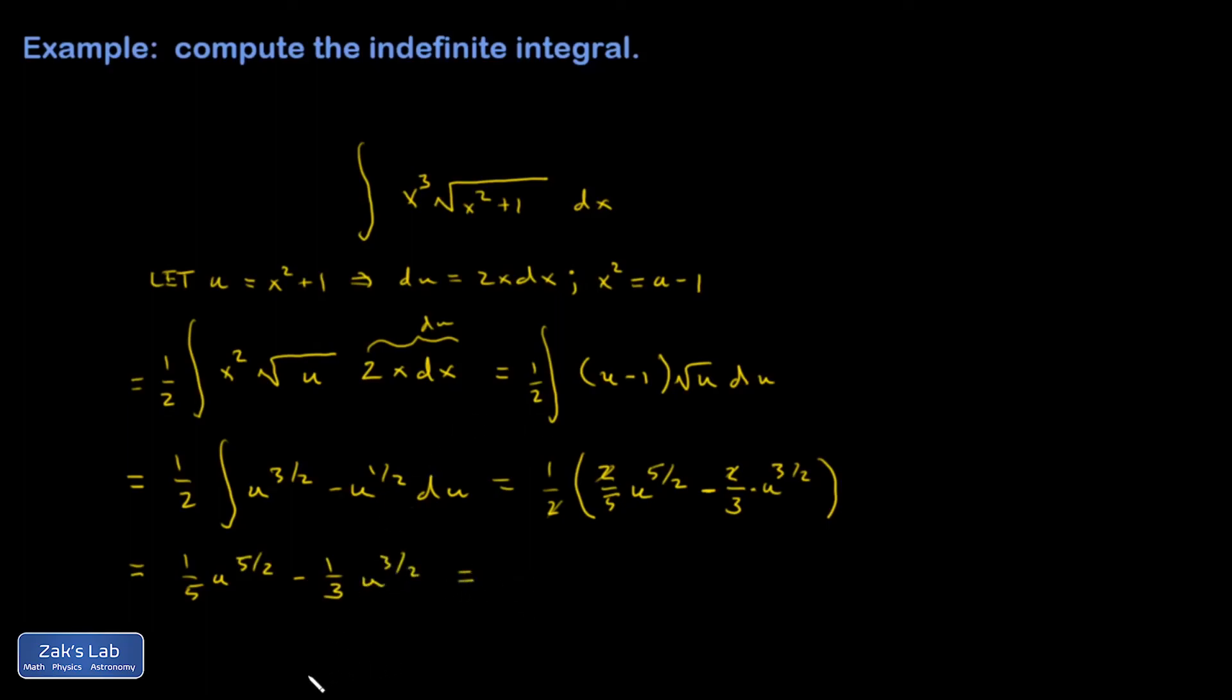And finally, I'm not done until I replace u with this definition in terms of x. So I get one fifth, x squared plus one, to the five halves, minus one third, quantity x squared plus one, to the three halves, and then to be totally correct, plus c.